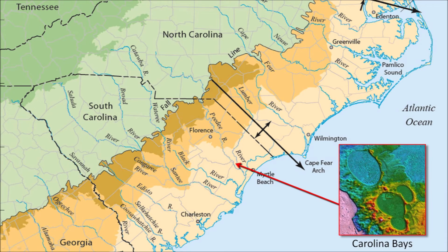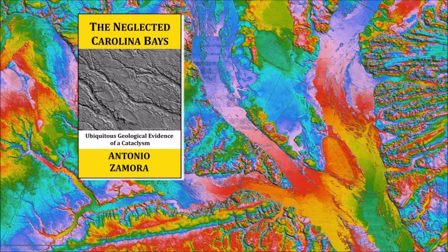It boggles the mind to think that the eastern coastline of the United States was adjacent to Mauritania in Africa 200 million years ago, when today these land masses are separated by 6,000 kilometers. The resistance to the idea that continents move is one of the reasons why plate tectonics was only accepted as a valid hypothesis in the middle of the 20th century after the discovery of the Mid-Atlantic Ridge. Thank you for joining me in the investigation of the Carolina Bays and the Younger Dryas Cataclysm. There is a link to the LiDAR visualization tool in the description of the video. My book about the Carolina Bays is available at Amazon. Please subscribe to my YouTube channel to be notified of future videos about the Carolina Bays and other scientific topics.